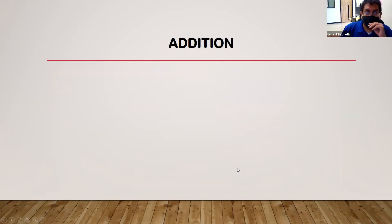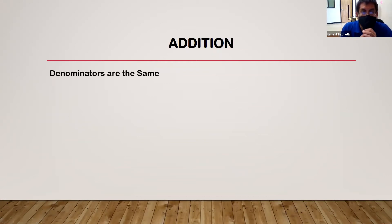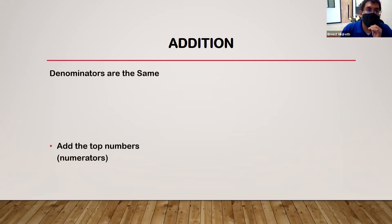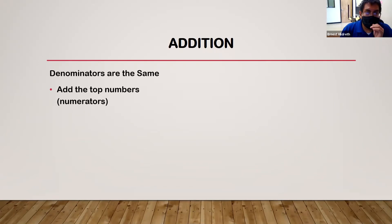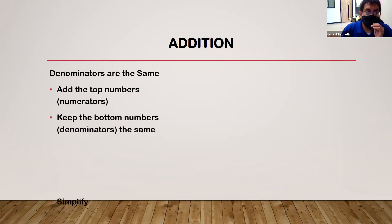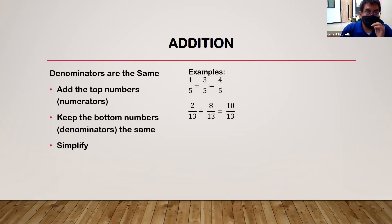For addition of fractions: if the denominators are the same, you add the top numbers (the numerators), keep the bottom numbers (denominators) the same, and simplify if you can. For example, one-fifth plus three-fifths: take the top numbers one and three, add them to get four, and the denominator stays five, so the answer is four-fifths.